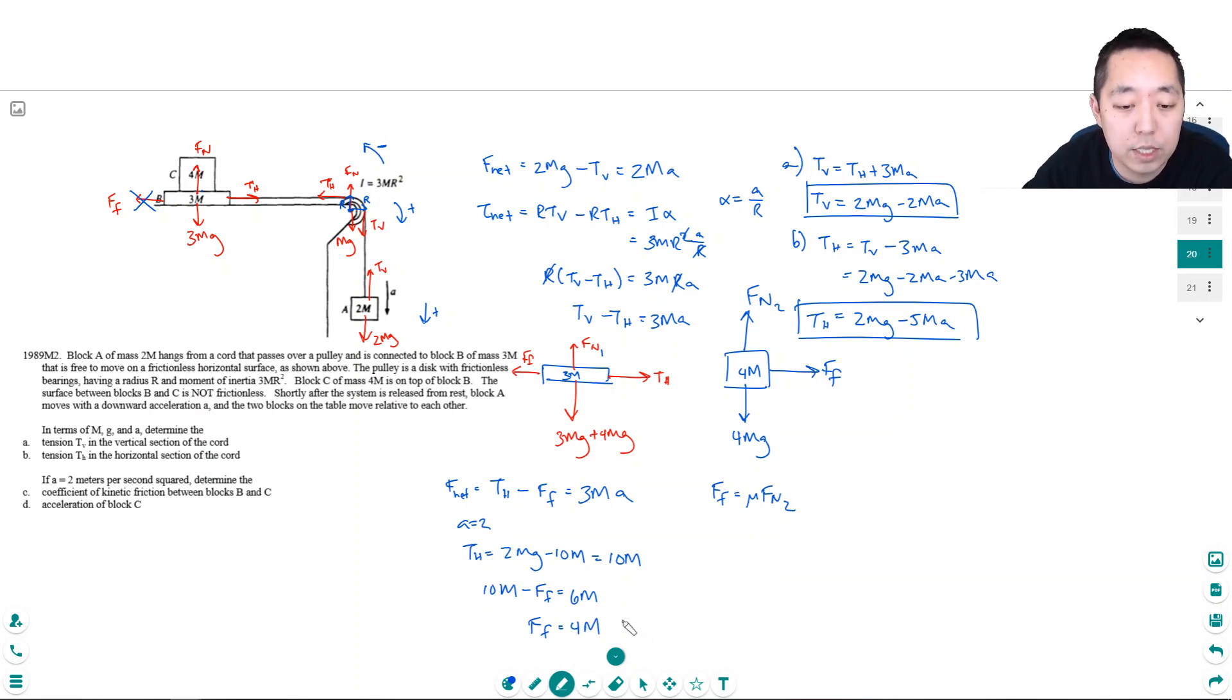That equals mu times FN2. That equals mu times FN2 equals 4Mg, which equals mu times 40M. So force of friction equals 4M equals mu times 40M. The M's cancel. So mu equals 4 over 40, which equals 0.1.